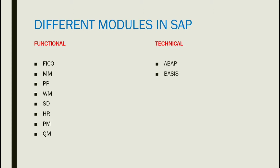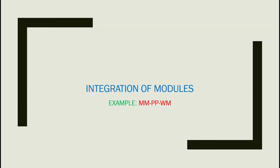Here you can see the different modules in SAP, categorized into functional and technical. The functional areas include Financial, Material Management, Production Planning, Warehouse Management, Sales and Distribution, Human Resources, Project Management, and Quality Management. On the technical side, we have ABAP and Basis — these fall under the coding side.